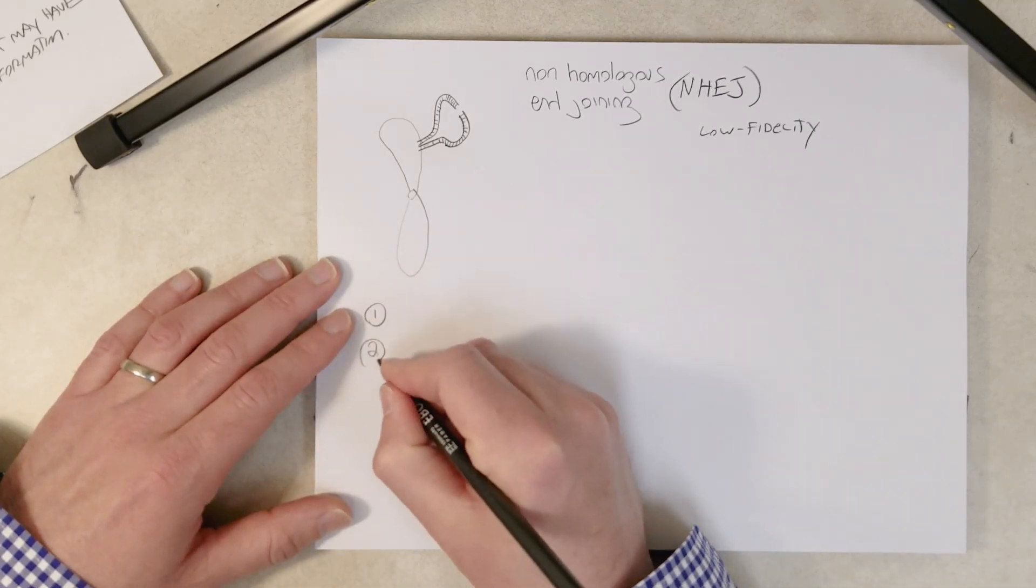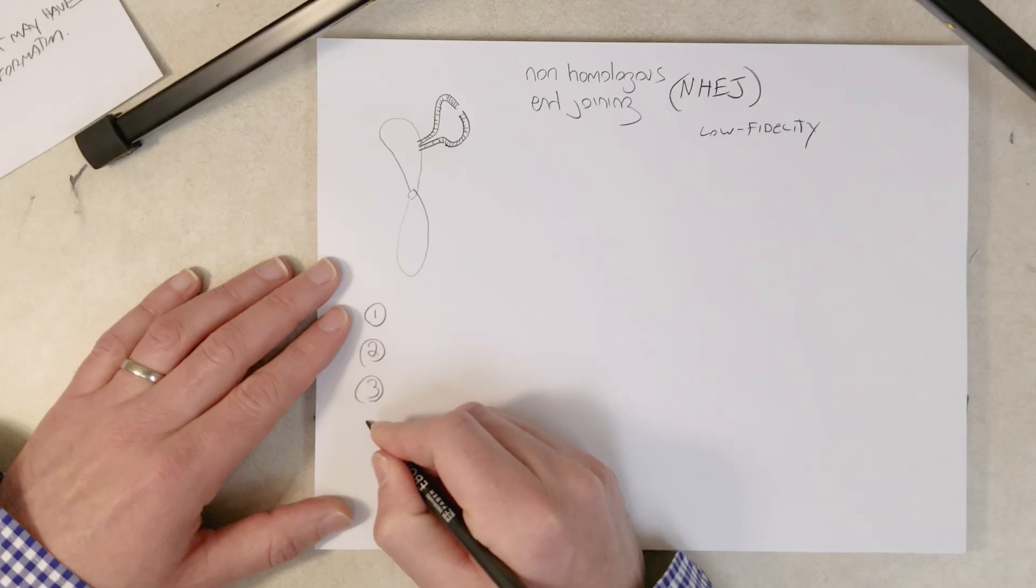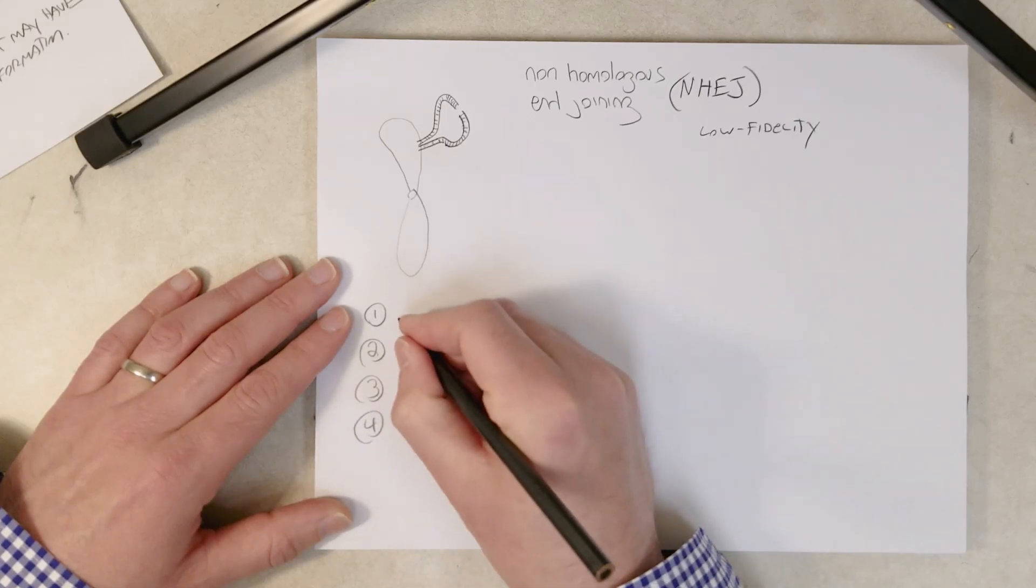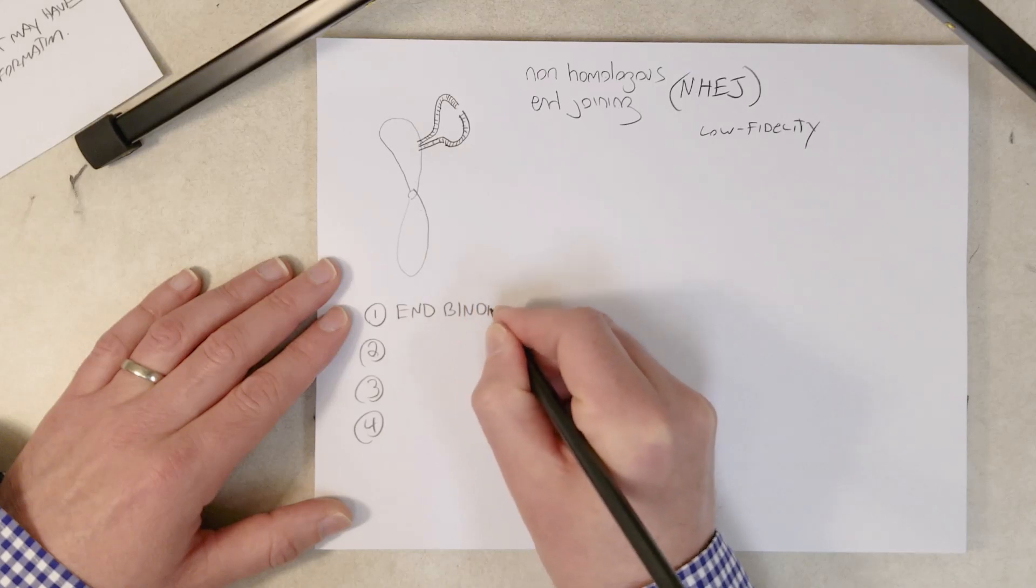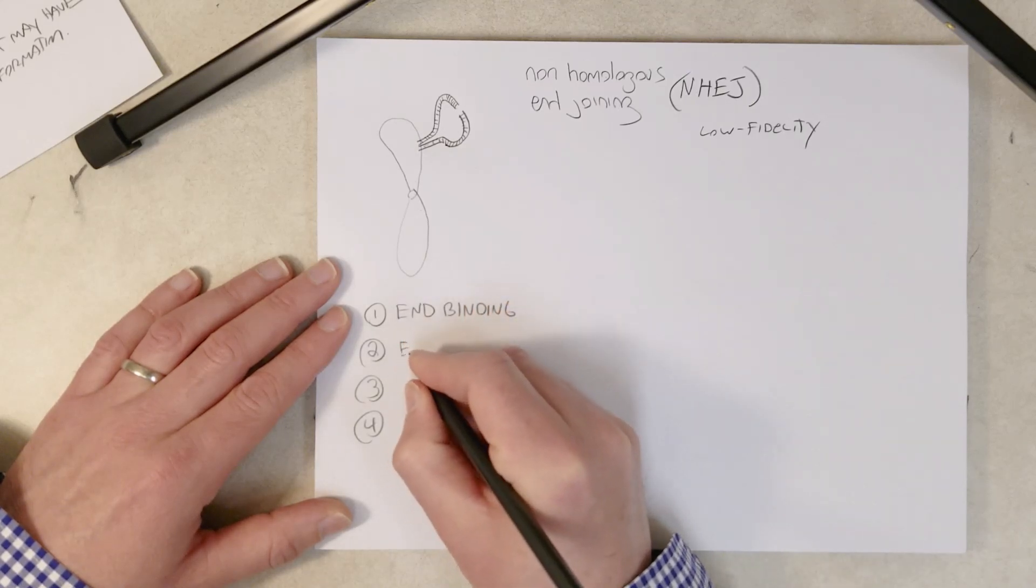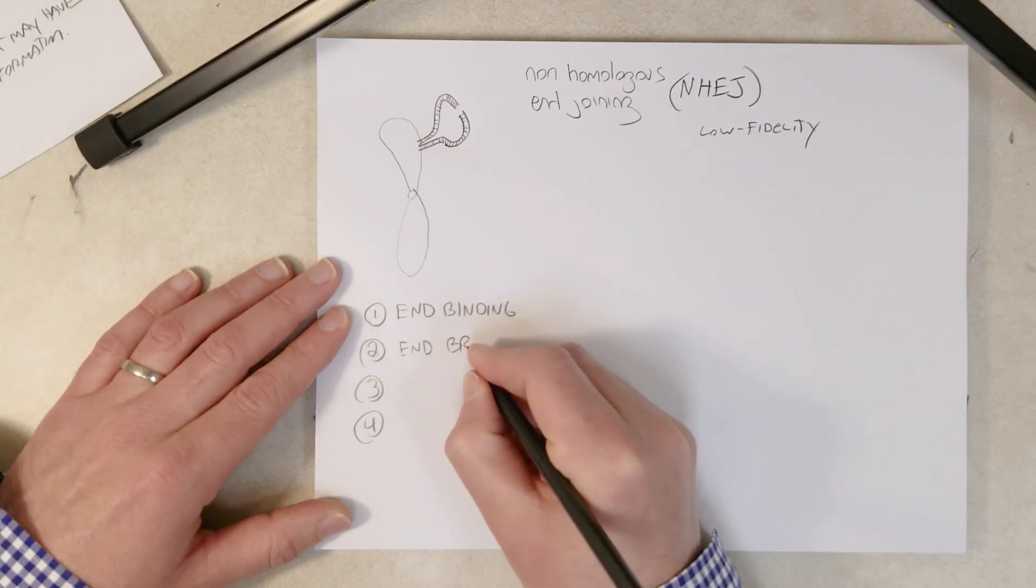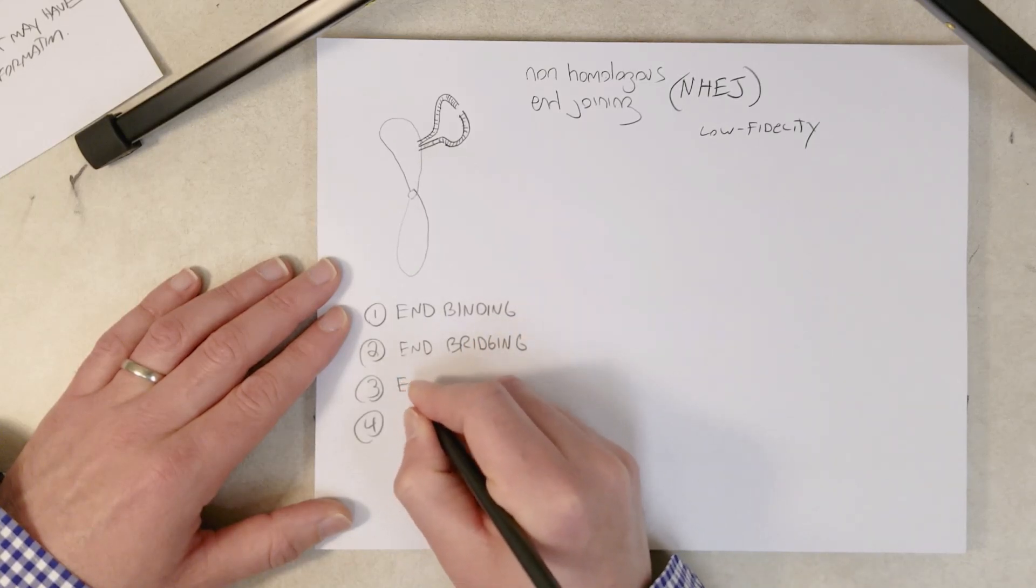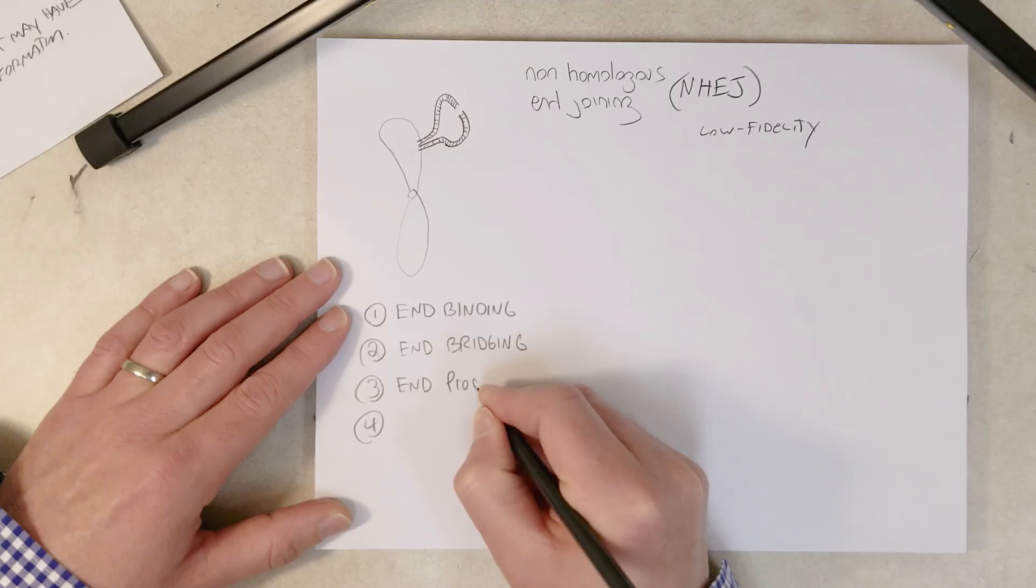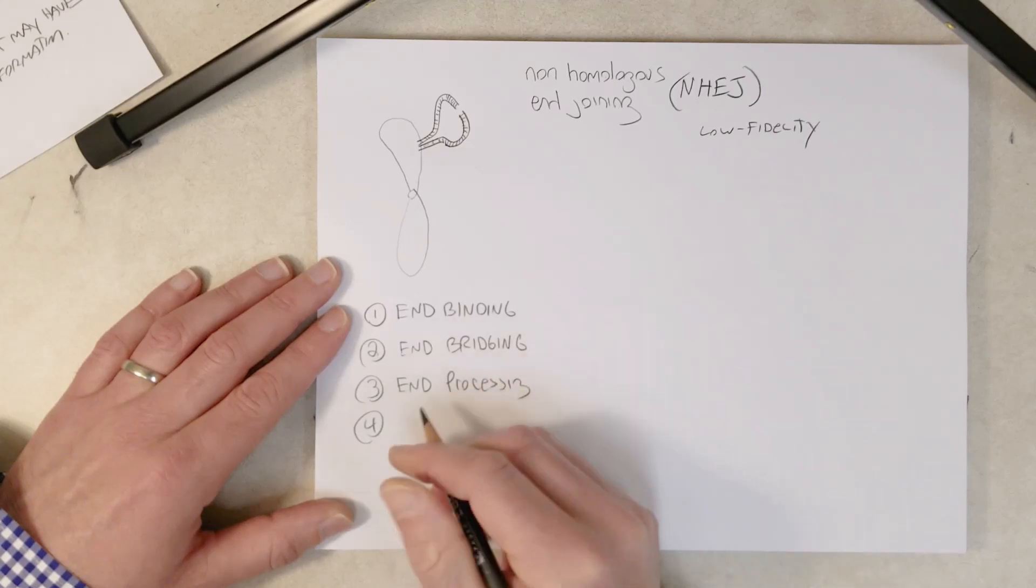So how does the mechanism work? We can come up with four basic steps: end binding, end bridging, end processing, and end ligation.